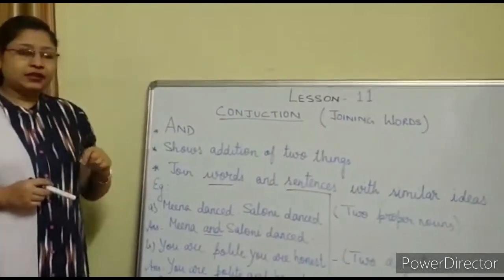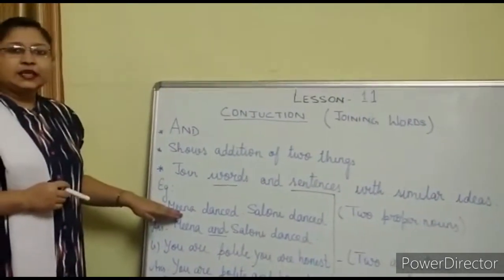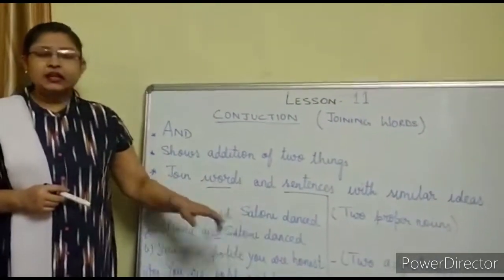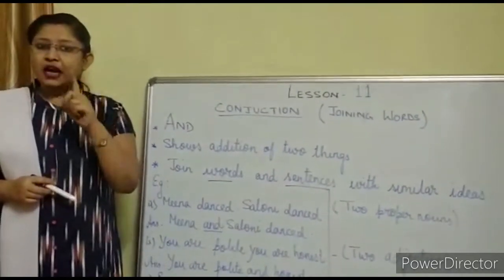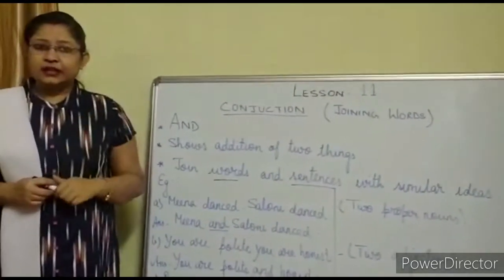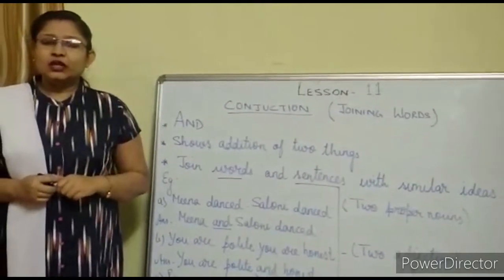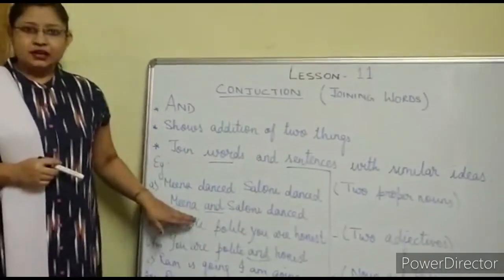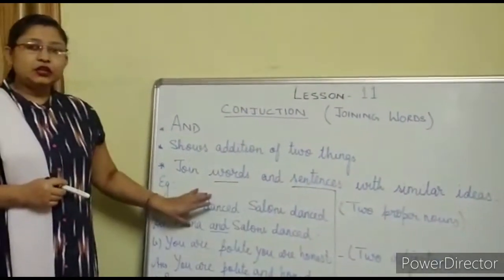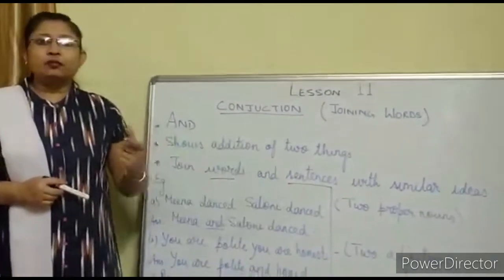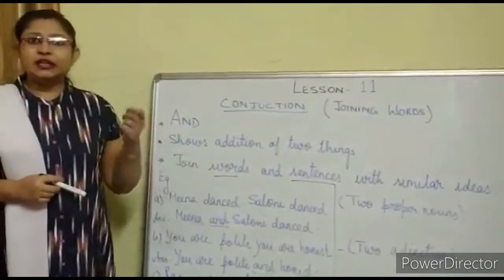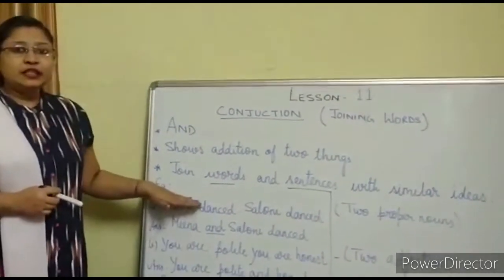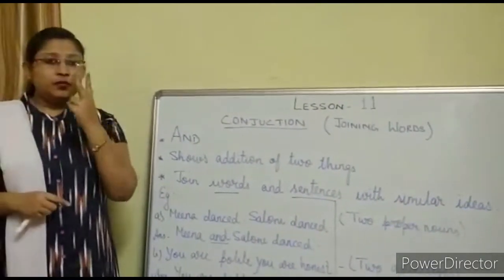Now let us see the examples. First example: 'Mina danced' and 'Saloni danced' — two separate sentences, but the idea is the same; both of them are dancing. So we join this with 'and': 'Mina and Saloni danced.' Here we are joining two proper nouns — Mina and Saloni are the names of two different persons.